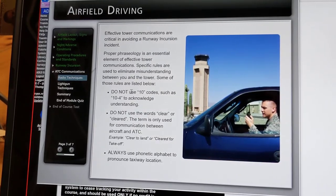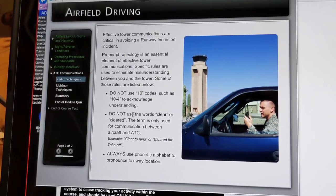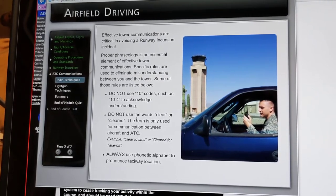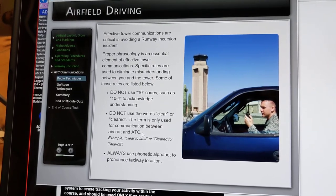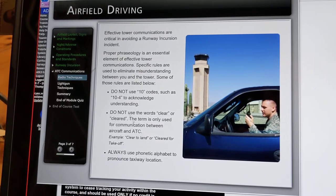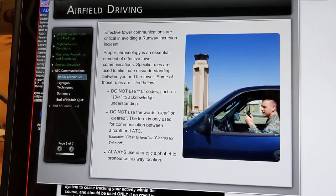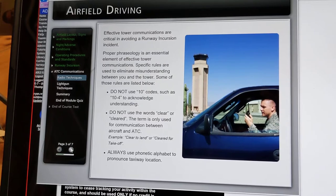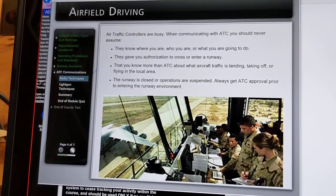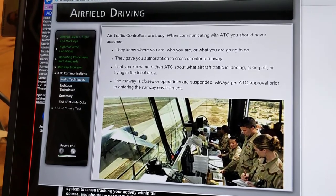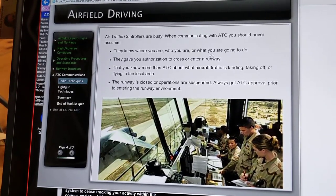Do not use 10-codes such as 10-4 to acknowledge understanding. Do not use the words 'clear' or 'cleared' — that term is only used for communication between aircraft and ATC. Always use the phonetic alphabet to pronounce taxiway locations. Air traffic controllers are busy. When communicating with ATC, you should never assume they know where you are, who you are, or what you are going to do.